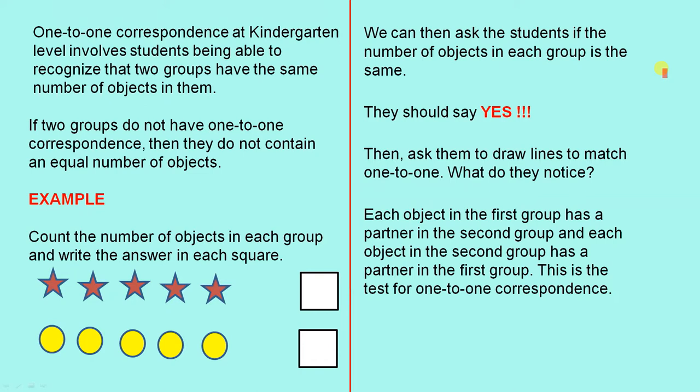We can then ask the students if the number of objects in each group is the same. They should say yes. Then ask them to draw lines to match one-to-one. What do they notice?